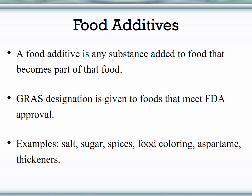Let's take a closer look at the role of the FDA in monitoring food additives. A food additive is any substance that becomes part of a food product when it is added to the food — they are not part of the original food. They are added to increase flavor and to increase shelf life. The FDA examines all food additives on the market, and if there is overwhelming evidence that they are not safe, they are not allowed in our food supply. Safe additives are given a GRAS — Generally Recognized as Safe — designation. Examples include salt, sugar, spices, food coloring, aspartame, and thickeners.